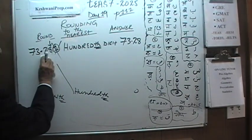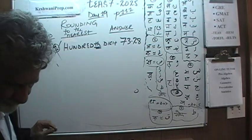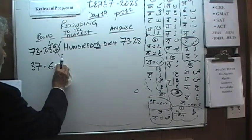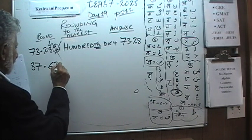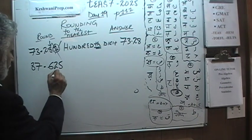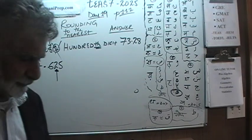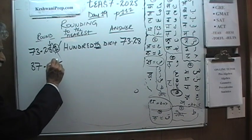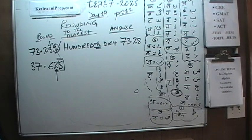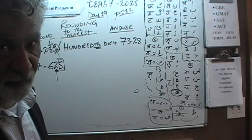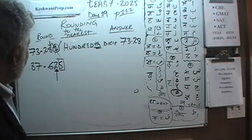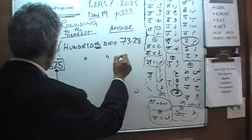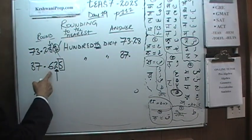87.625: where is the hundredths digit? That is the 2. What comes right after it is 5, and 5 is of course equal to or more than 5. Therefore this 2 will become 3, and 87.625 rounded to the nearest hundredth becomes 87.63.